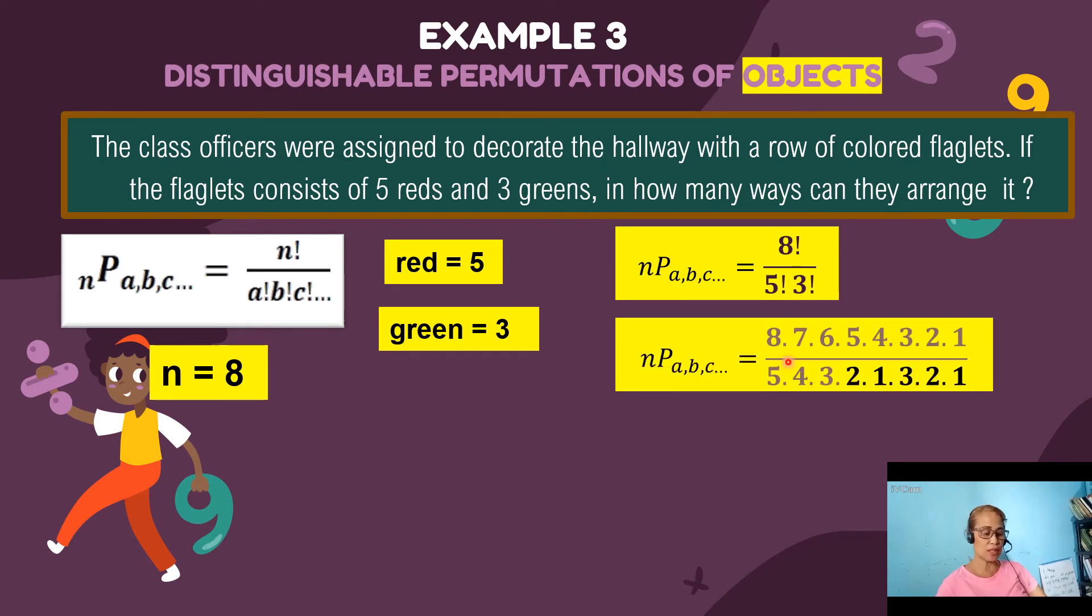we get n P a, b, c will have eight factorial divided by five factorial times three factorial. Expanding this, we get 8, 7, 6, 5, 4, 3, 2, 1, 5, 4, 3, 2, 1.